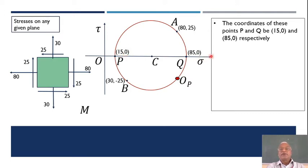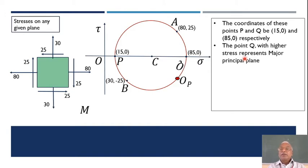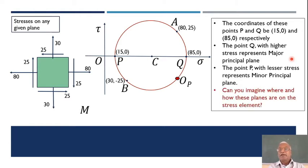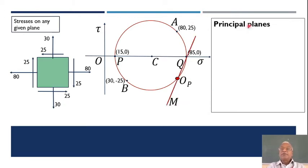With coordinates 15, 0 and 85, 0: point Q with the higher stress magnitude of 85 represents the major principal plane, while point P with the lesser magnitude of 15 represents the minor principal plane or minor principal stress. Now, can you identify where and how these planes are on the stress element? Since 85, 0 represents point Q, which represents a plane — we need to find how and where this plane lies.